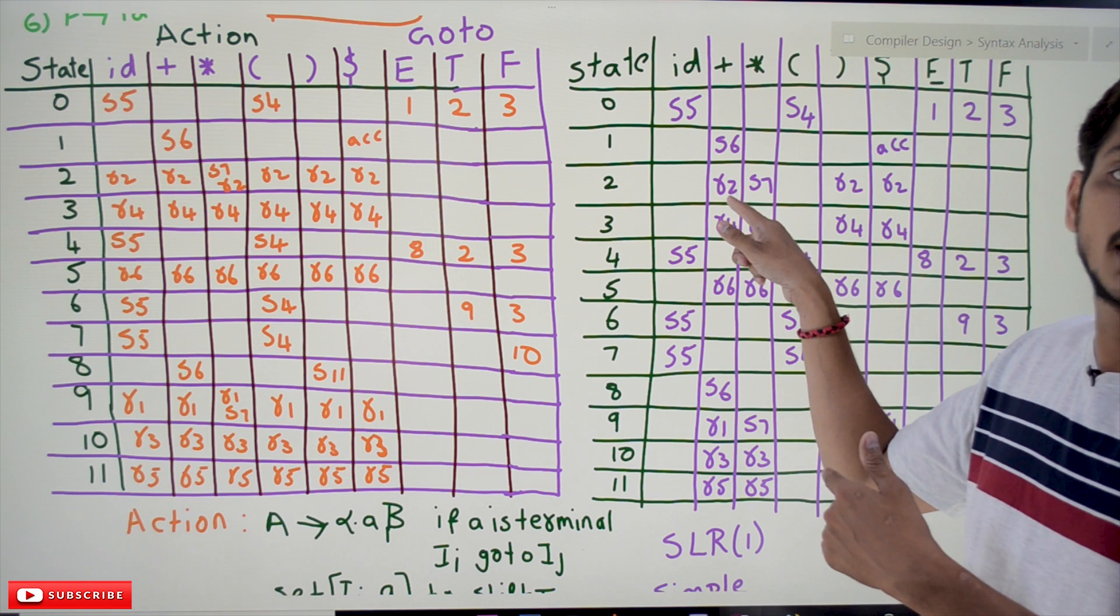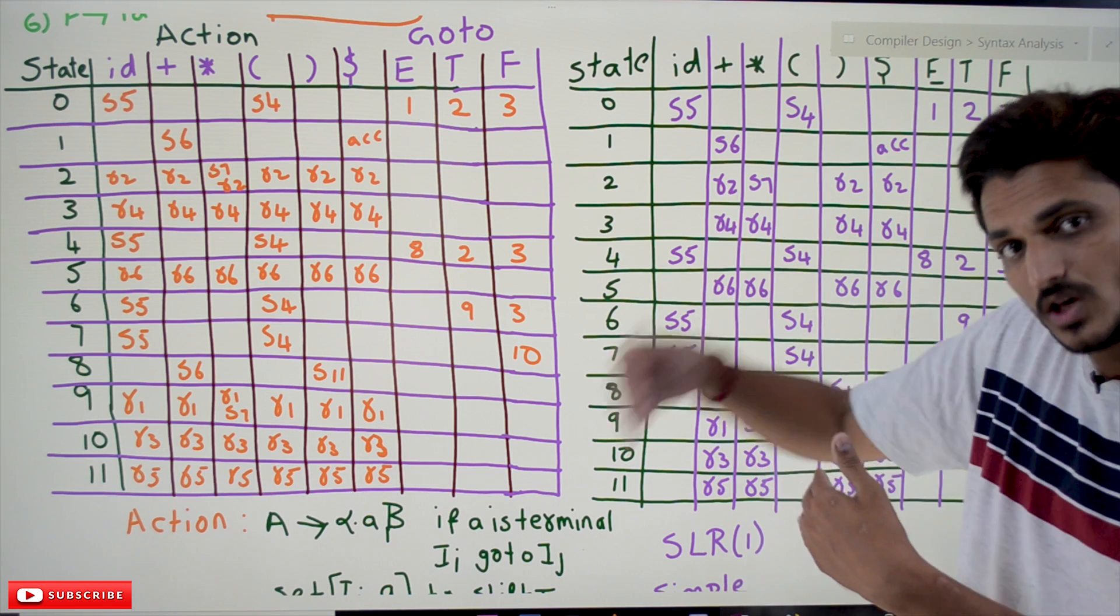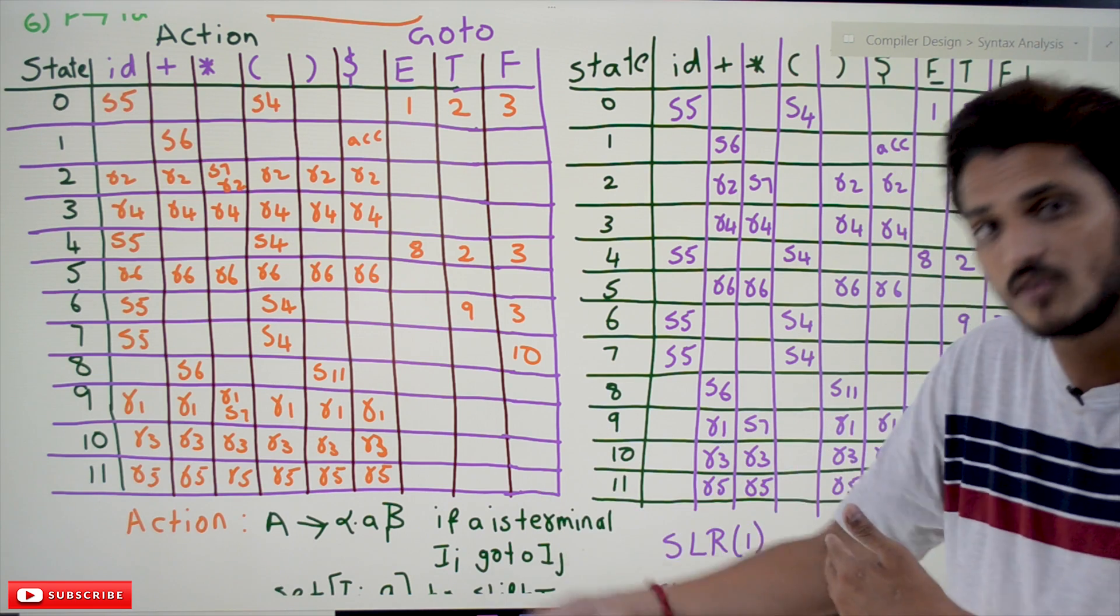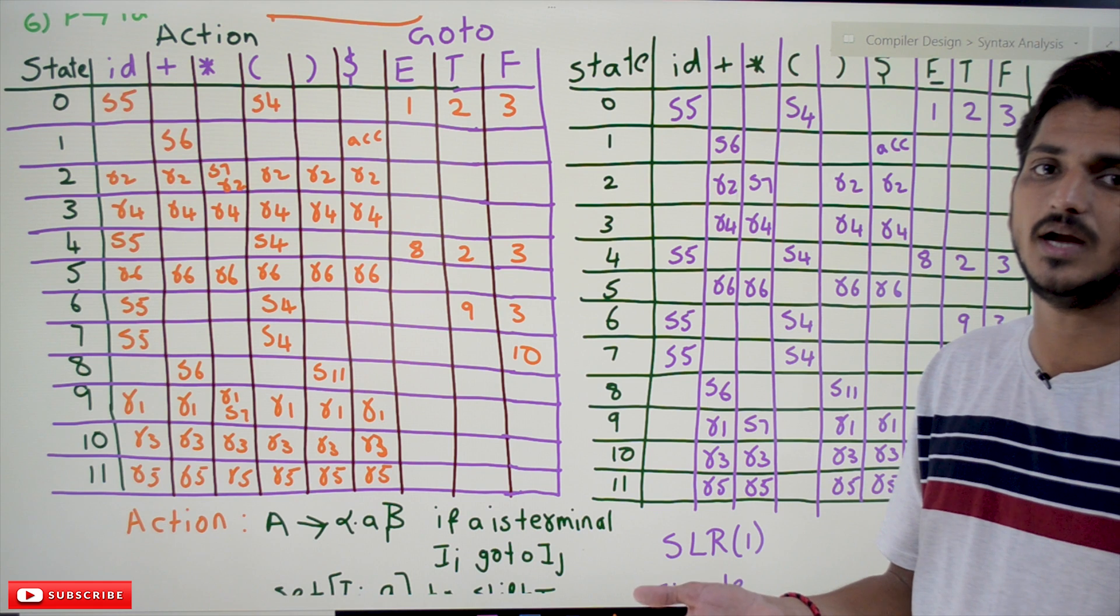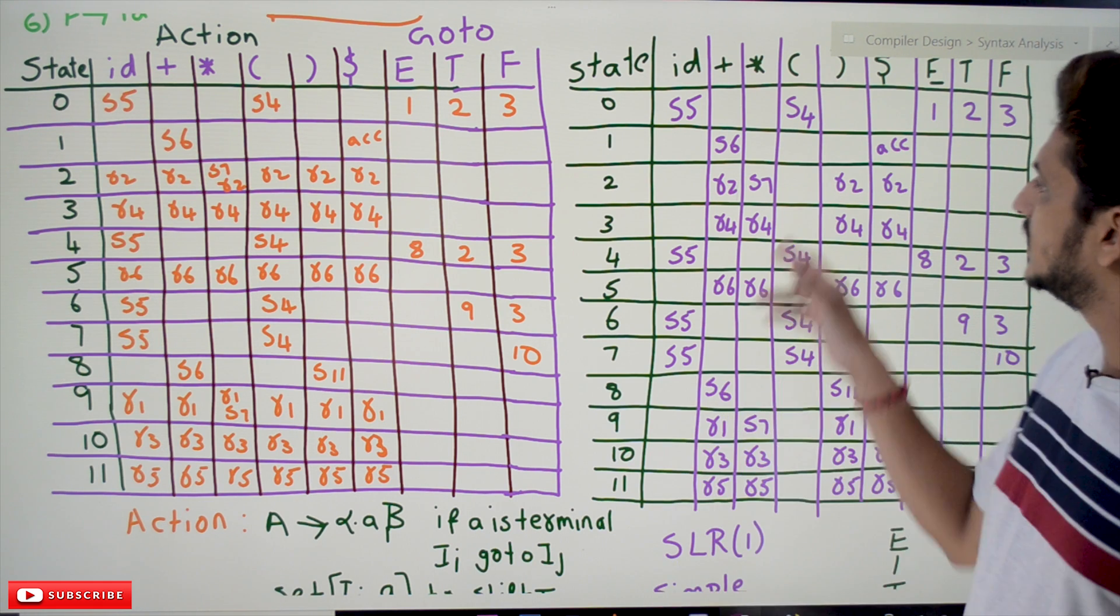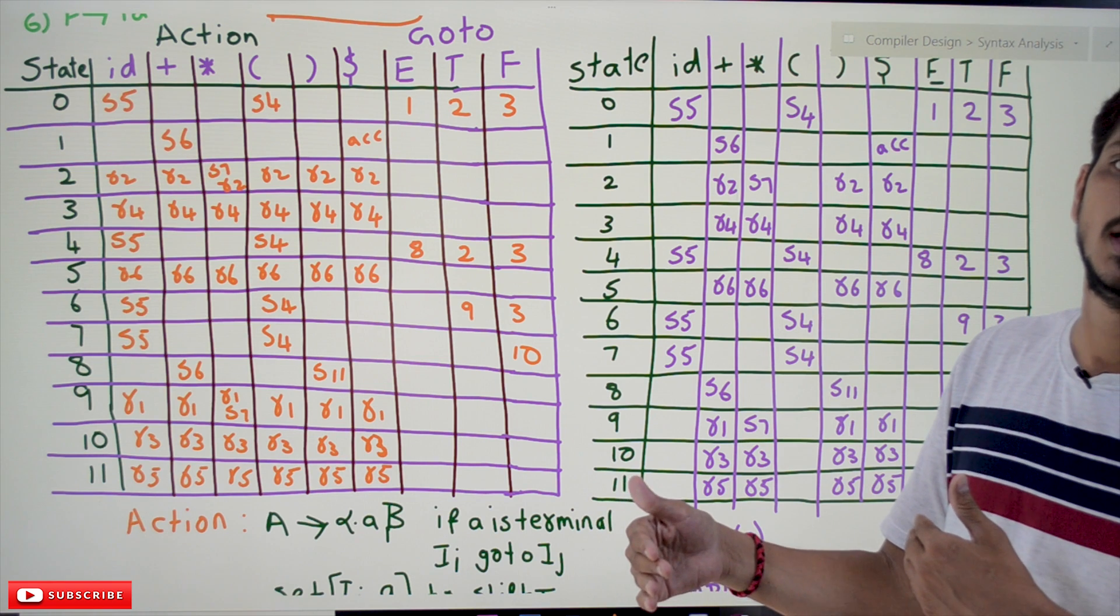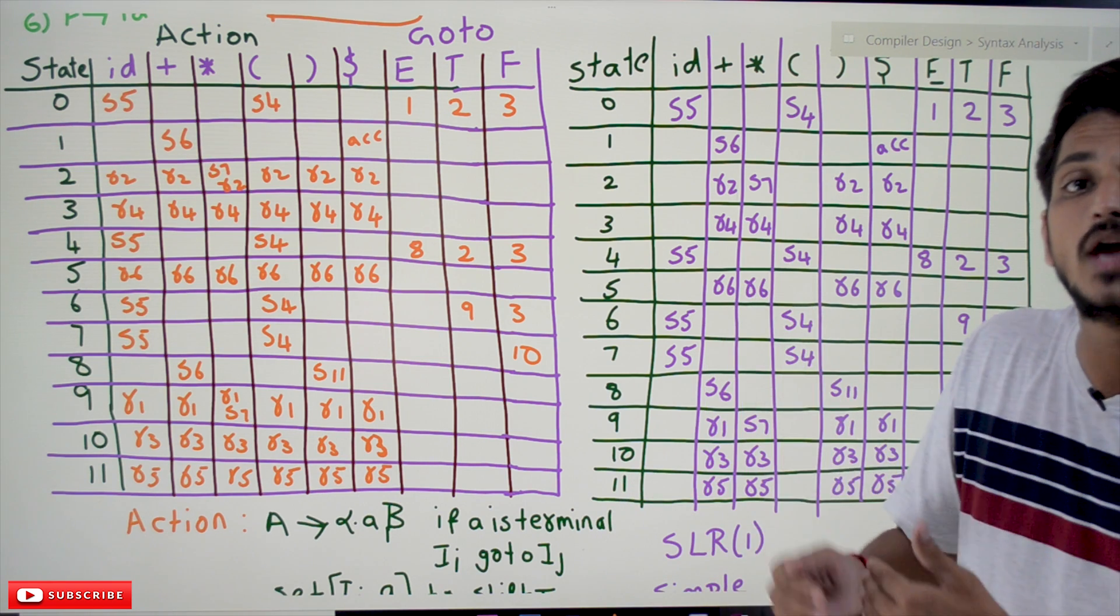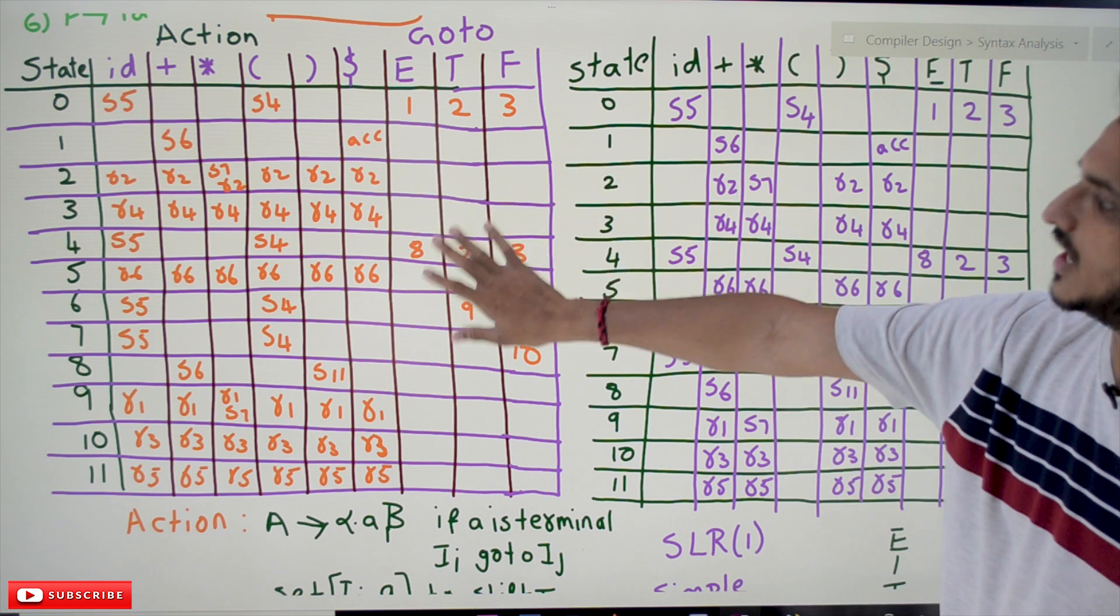But in SLR(1) we consider the next input symbols. We are placing reduce action only on the follow symbols of E. After reduction to E, we are going to identify the follow symbol of E because E has been completed. That's why it does the action only at the follow symbols, using a look ahead of one symbol. That's why it's got the name SLR(1).